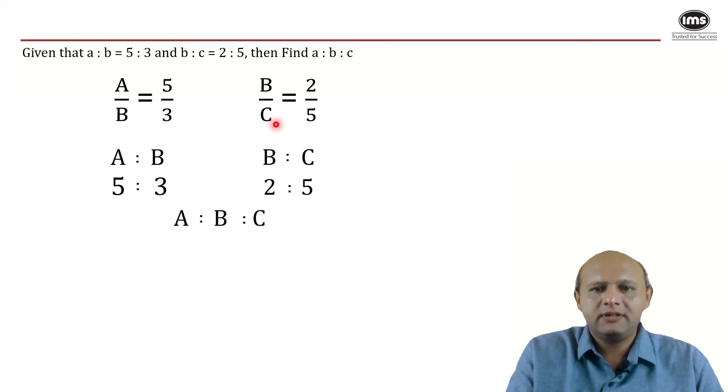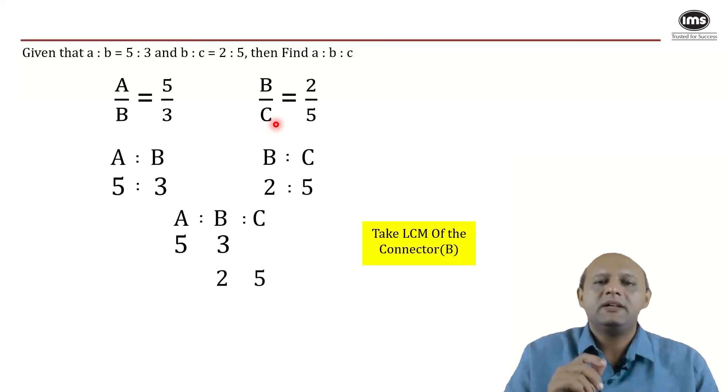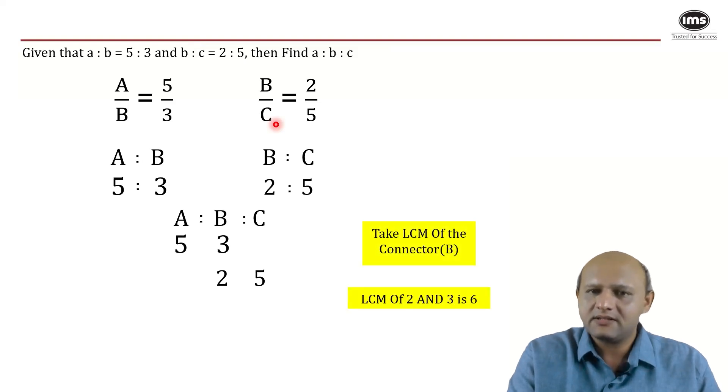Now, more often than not, what is done in such cases is to understand what is the connector, which is the element that is connecting all the three? It is b, right? So what we do in this case is take the LCM of the connector. What is the LCM of 3 and 2? The LCM is 6.